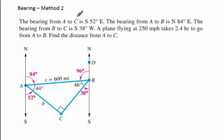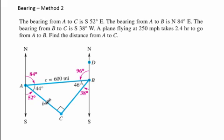The bearing from A to C is south 52 degrees east. The bearing from A to B is north 84 degrees east. The bearing from B to C is south 38 degrees west. A plane flying at 250 miles per hour takes 2.4 hours to go from A to B, so we find distance AB: 2.4 times 250 equals 600 miles.